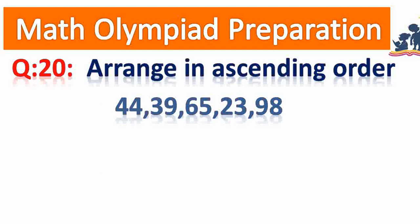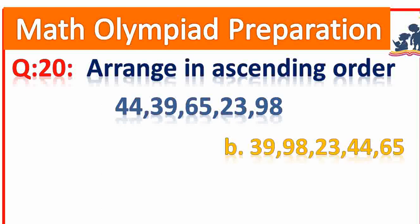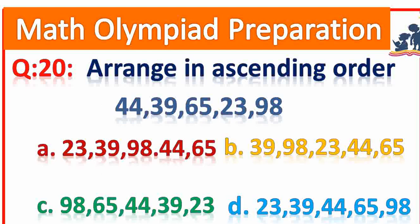Question number 20. Arrange in ascending order: 23, 39, 44, 65, 98. The answer is D.